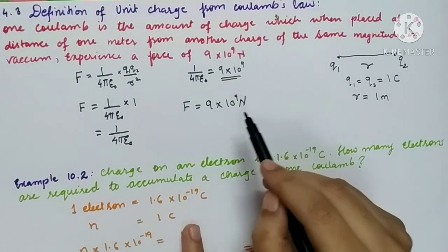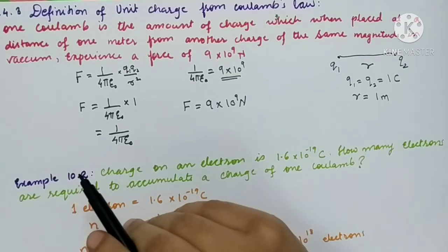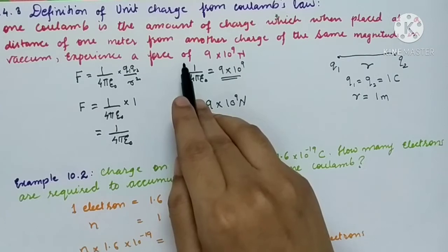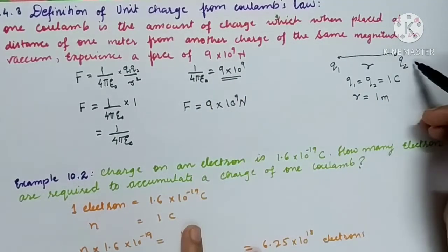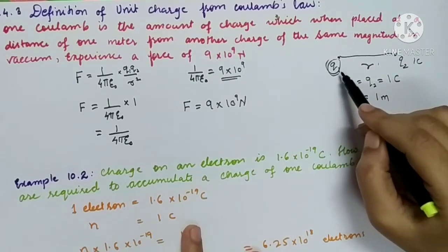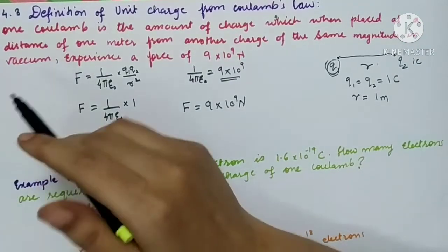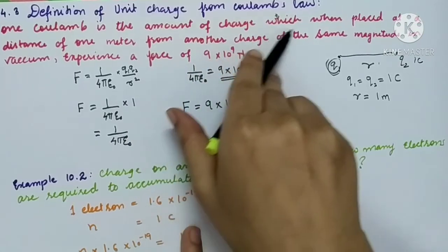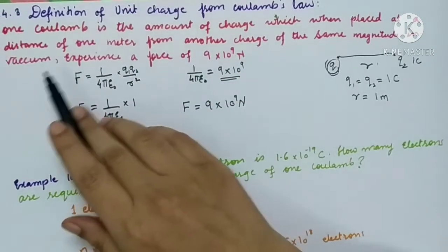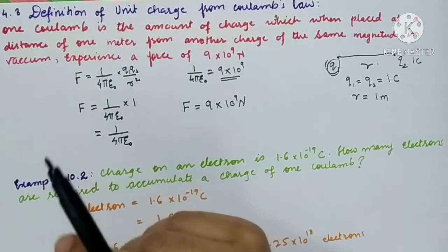So we can define 1 coulomb as: 1 coulomb is the amount of charge which, when placed at a distance of 1 meter from another charge of the same magnitude in vacuum, experiences a force of 9 × 10⁹ Newton. This is the definition of 1 coulomb.